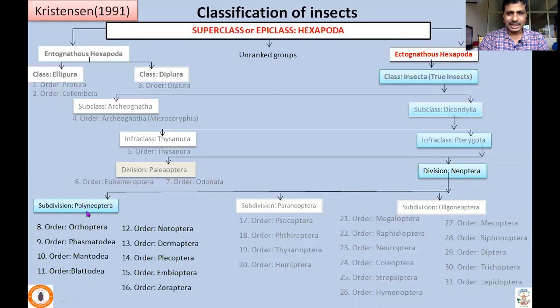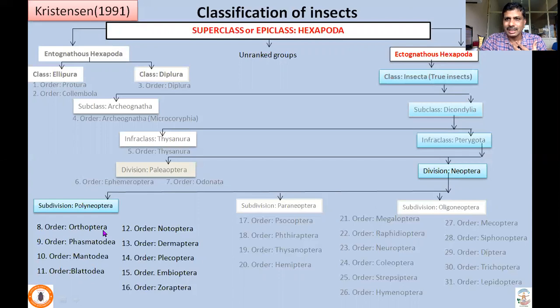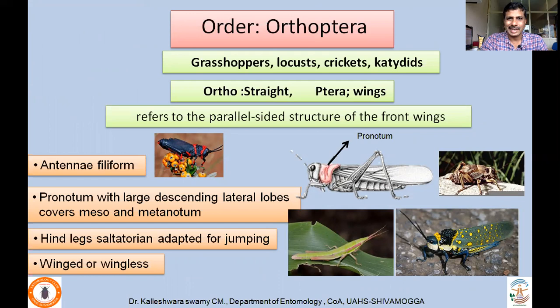Division Neoptera consists of three subdivisions: Subdivision Polyneoptera, Paraneoptera, and Oligoneoptera. For the next two or three classes, I will be covering the characters of orders and economically important families under each. In lecture number seven, I will be talking about Subdivision Polyneoptera and Order Orthoptera. Order Orthoptera includes grasshoppers, locusts, crickets, and katydids. Etymologically, 'ortho' means straight and 'ptera' means wings, derived from the Greek word referring to the parallel-sided structure of the front wings.